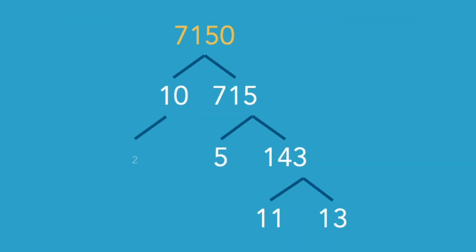So we have, for the prime factorization of 7,150, well we have the 2 and the 5 from the 10 from the very beginning. Then we have a 5, and we have an 11 and a 13.